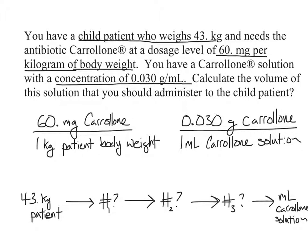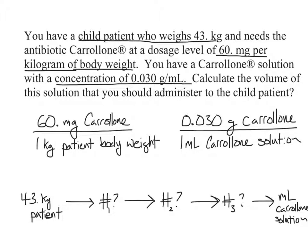So what does the first arrow represent? This first arrow represents a conversion factor — one of the two fractions we have — that we multiply the 43 kilograms by to convert it to a new number. The units in the conversion factor and the original units (kilograms patient) need to cancel. Of the two conversion factors, the only one that has patient body weight is the dosage one. So the first arrow represents the dosage conversion factor.